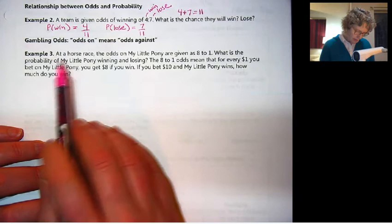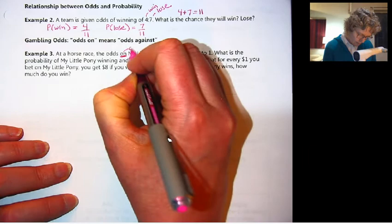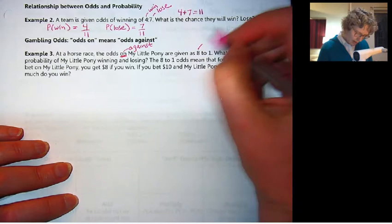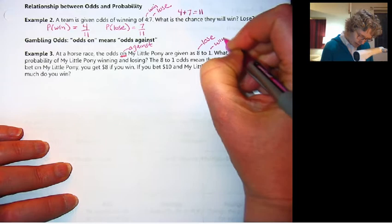Let's look at an example of odds against. At a horse race, the odds on my little pony are given as eight to one. So this phrase, odds on, actually means against. What they're saying is the odds of losing to winning. So eight chances that they'll lose to one chance that they win.